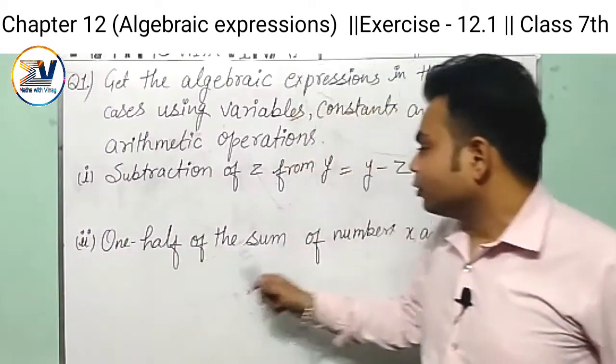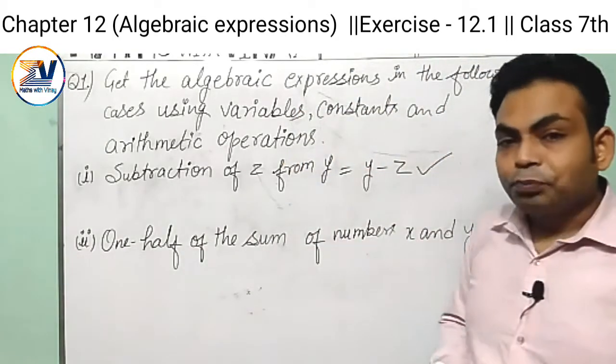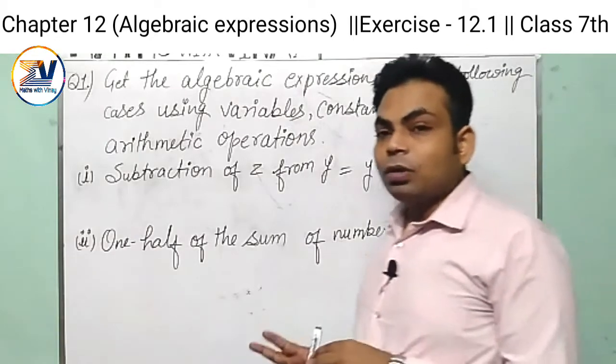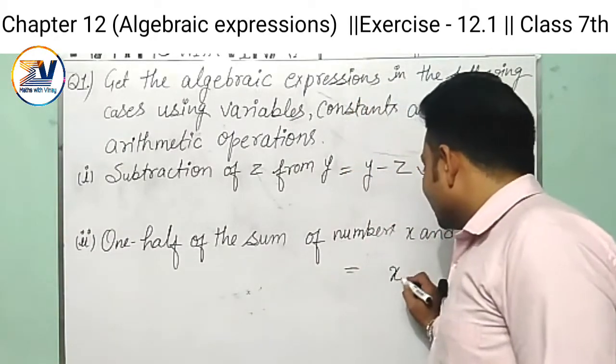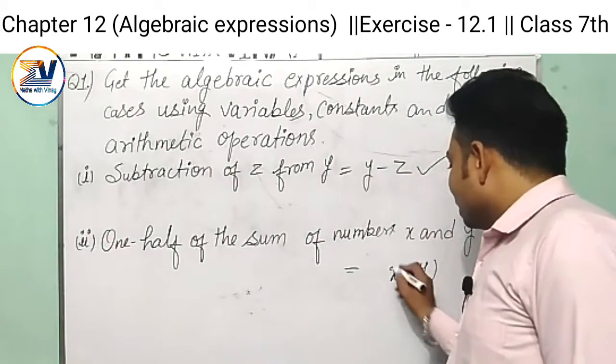Now we go to the second one. One-half of the sum of numbers x and y. We need to take the sum of x and y and then take half, so the sum of x and y is x plus y, and the half is one upon two multiplied by x plus y.